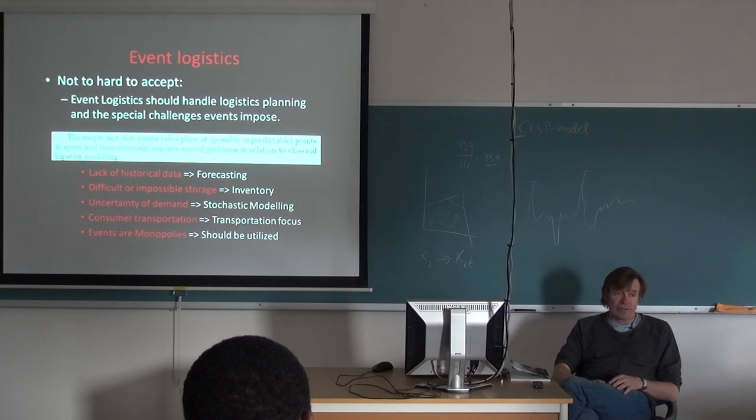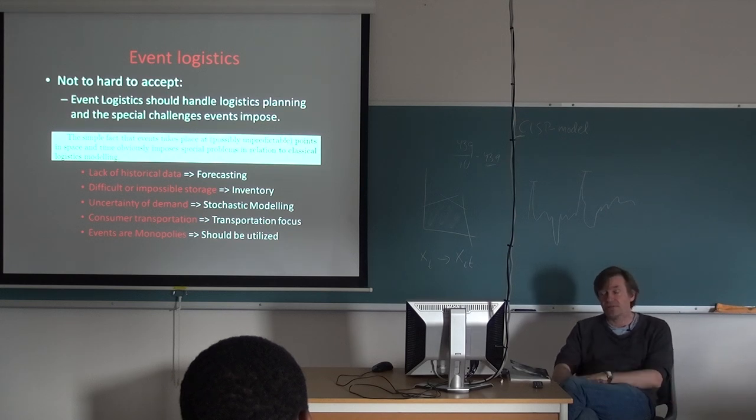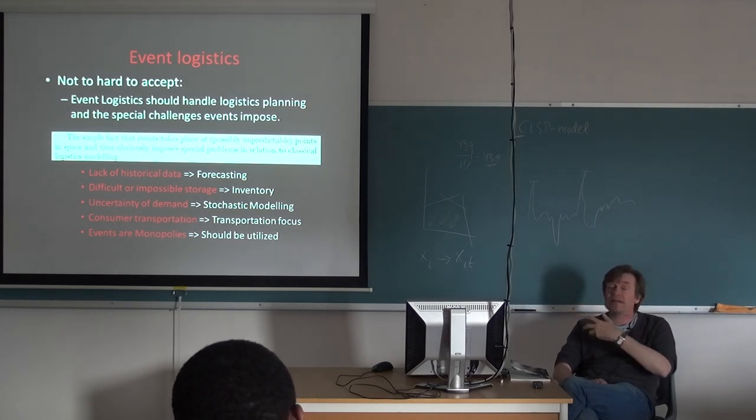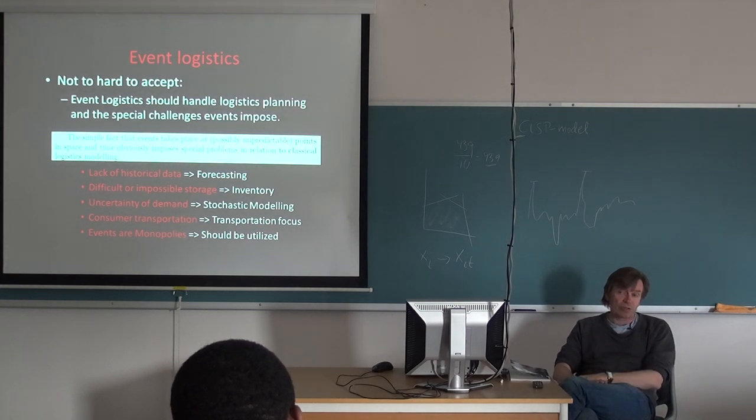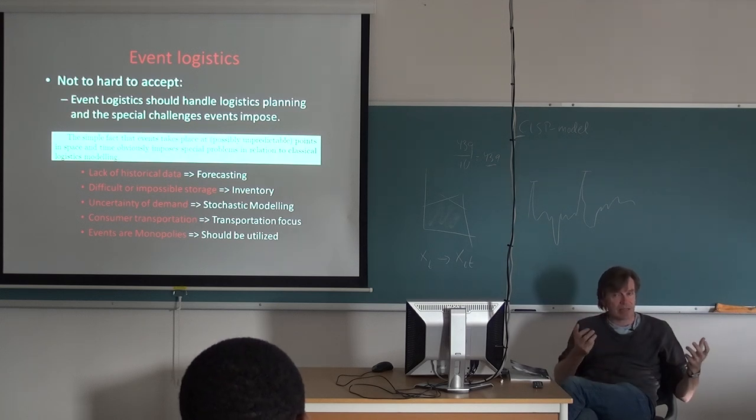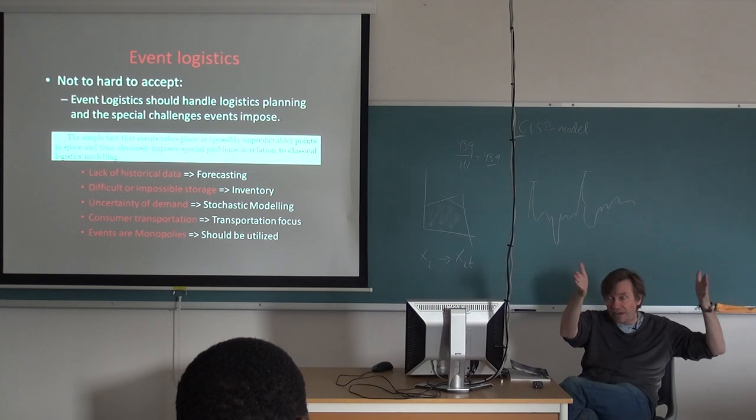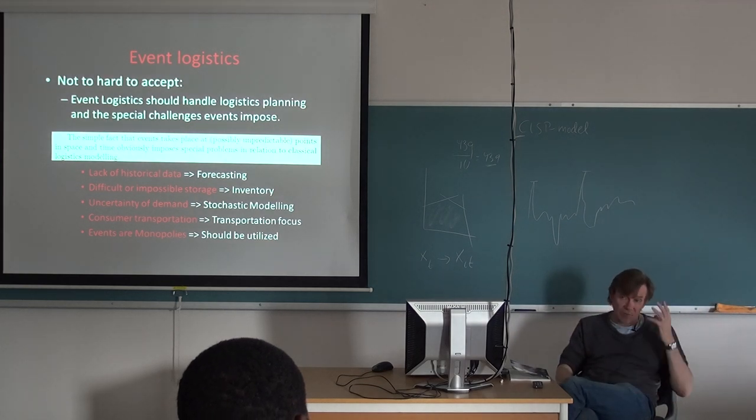The third point there is very important, a very important difference between classical logistics and event logistics. And that is referred to here as uncertainty of demand. Of course, what it means is if you want to do this informal mathematical modeling, you need to move from deterministic to stochastic models, which you briefly have been into by our talks about the newsboy model. But the point here is that when you have these events which take place over typically a long time period, then it's much more obvious that uncertainty would be greater on the demand side. So it's more important here to take uncertainty into account and to cope with it.